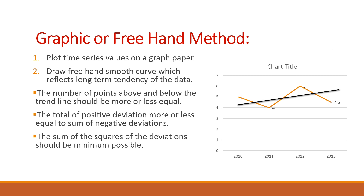When we are drawing a trend line, we have to consider three points. The first point is: the number of points above the trend line and the number of points below the trend line should be more or less equal. In this trend line we can see two points above and two points below. If the Y values are 5 in number, then you can draw a trend line with three points above and two points below the trend line — it should be more or less equal. Some variation is acceptable.